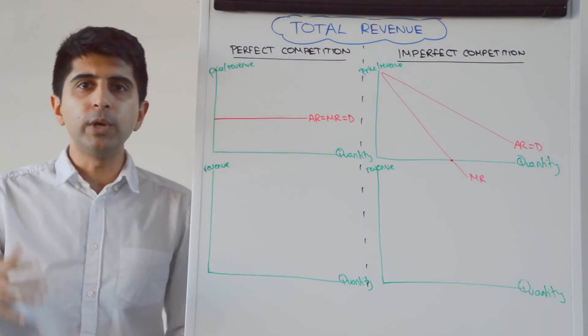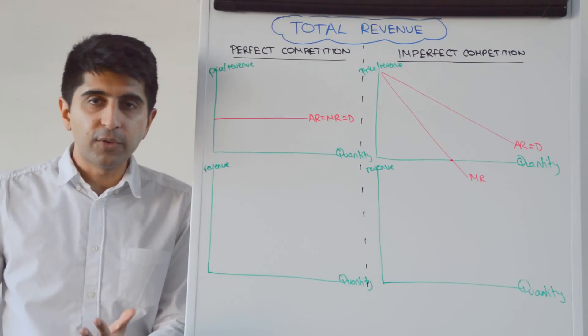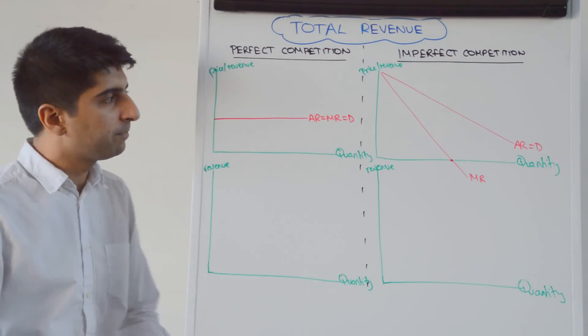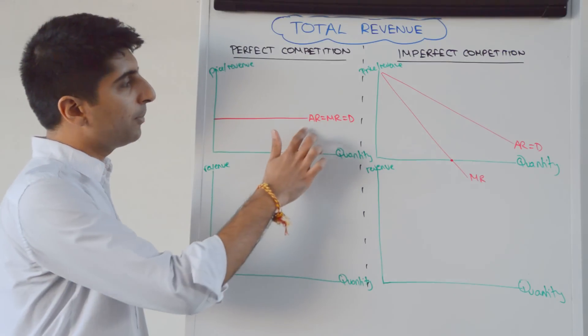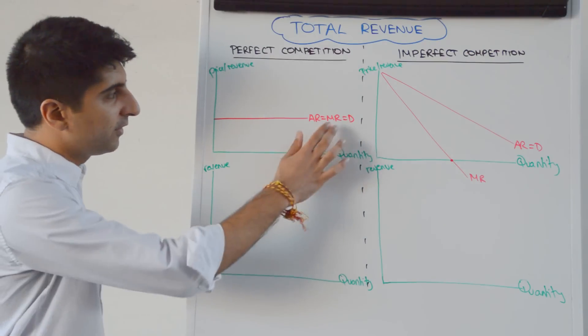Let's take perfect competition. We learned from my previous video that firms are price takers. They have no influence on the price whatsoever. So price in that example is equal to AR, which is equal to MR, which is the demand curve.